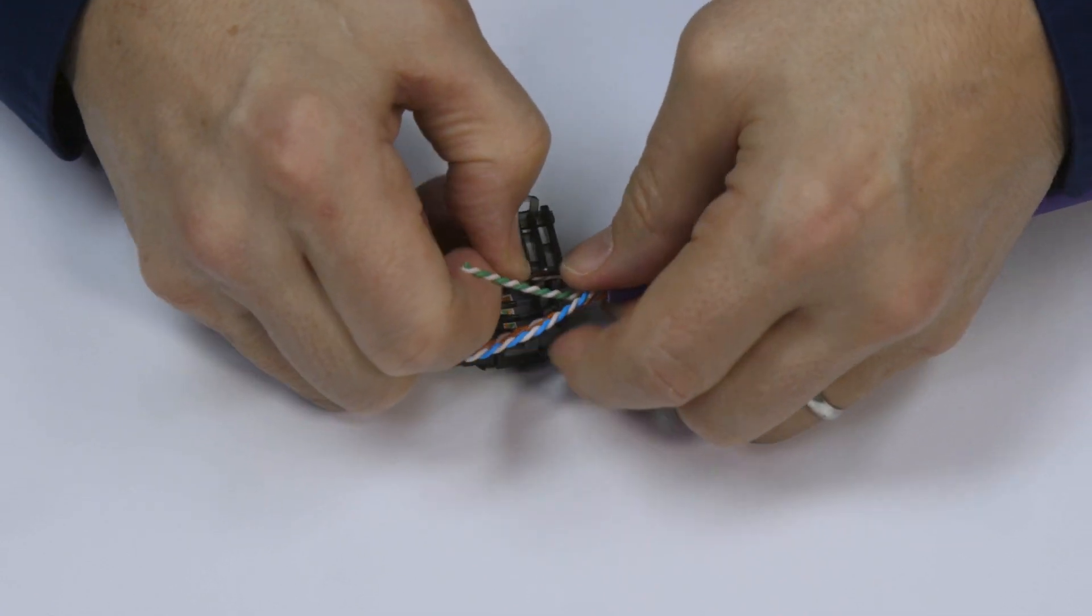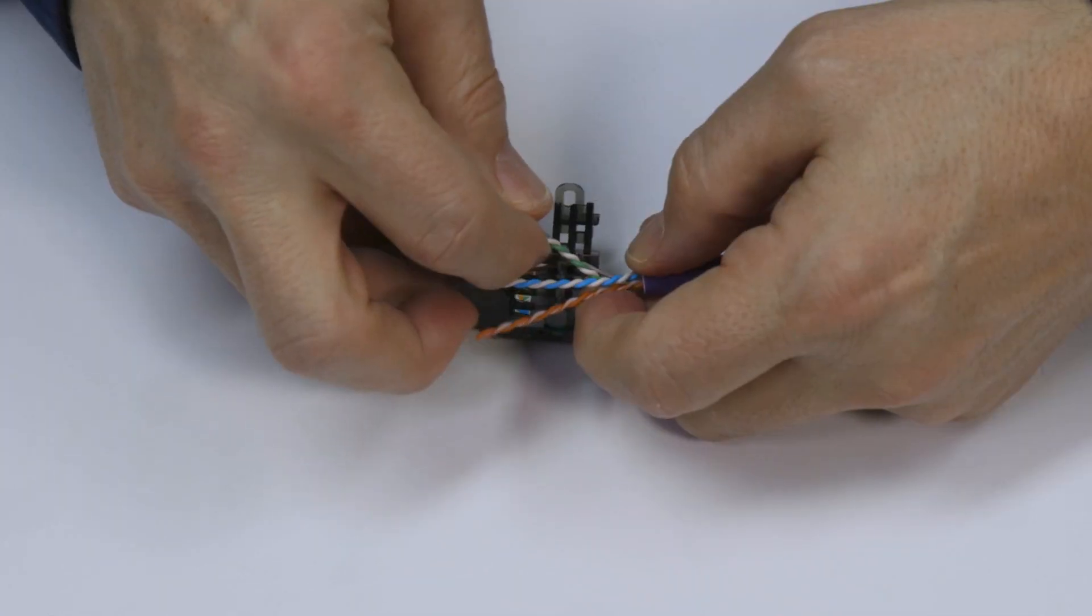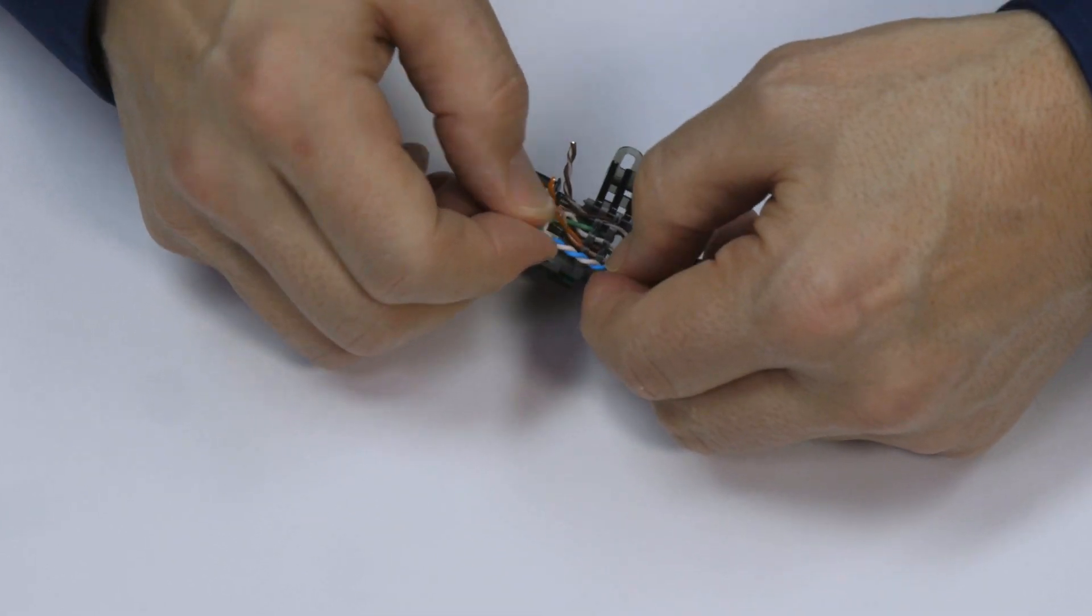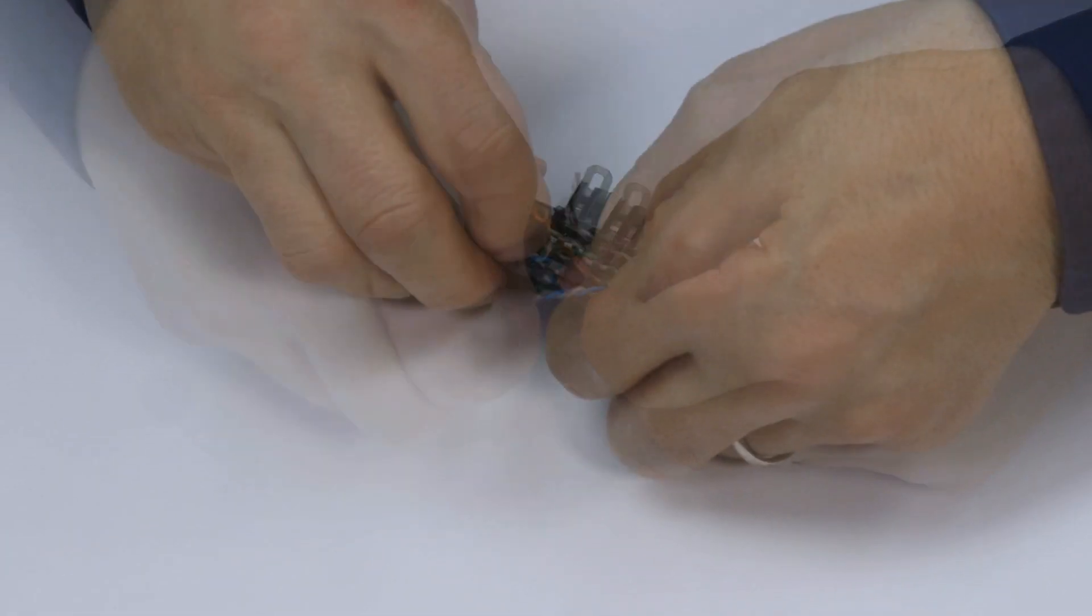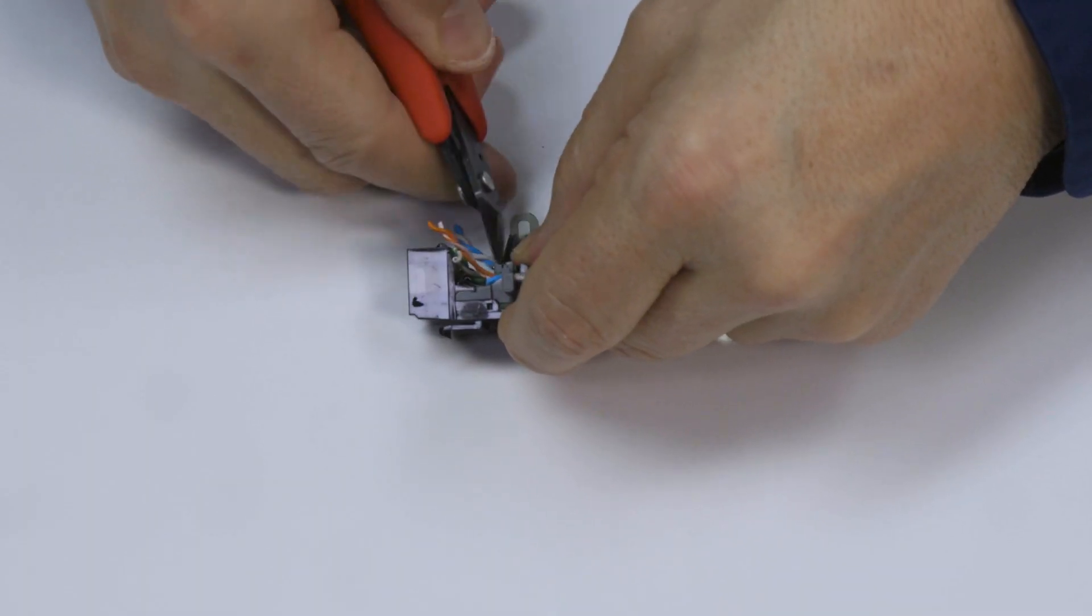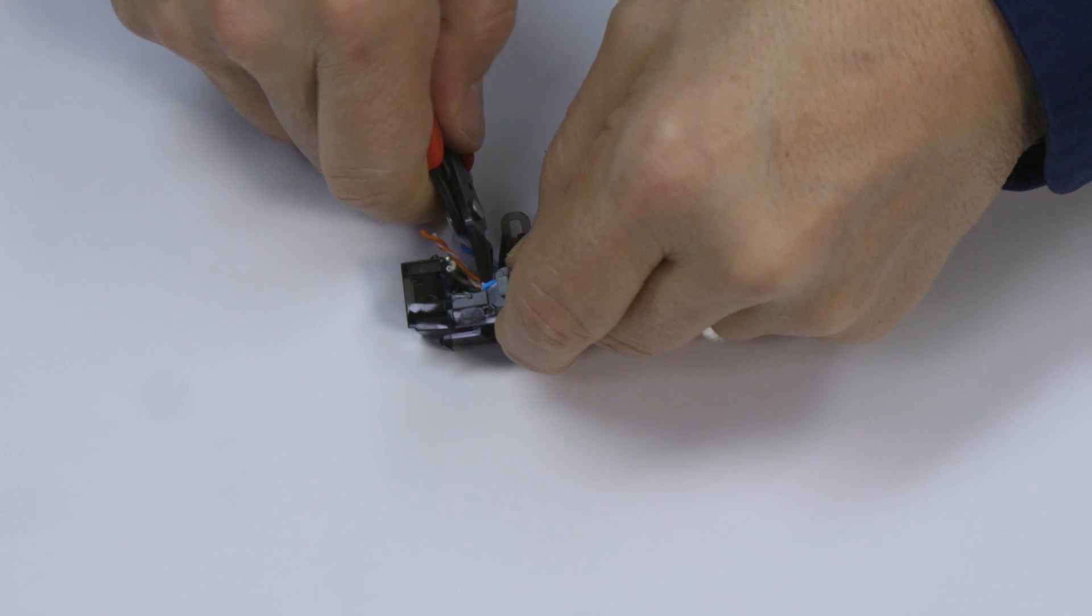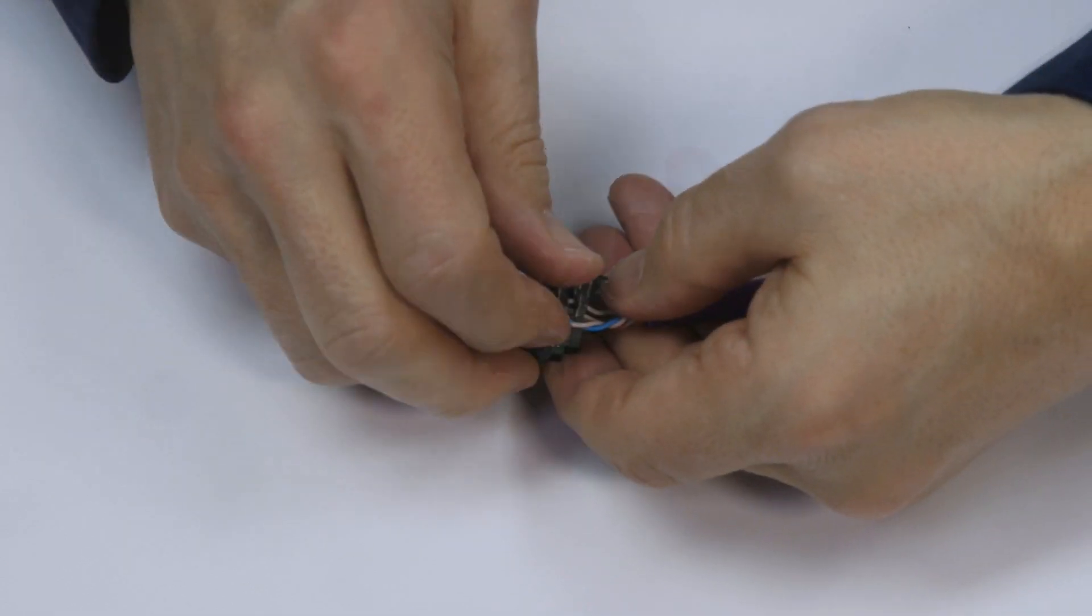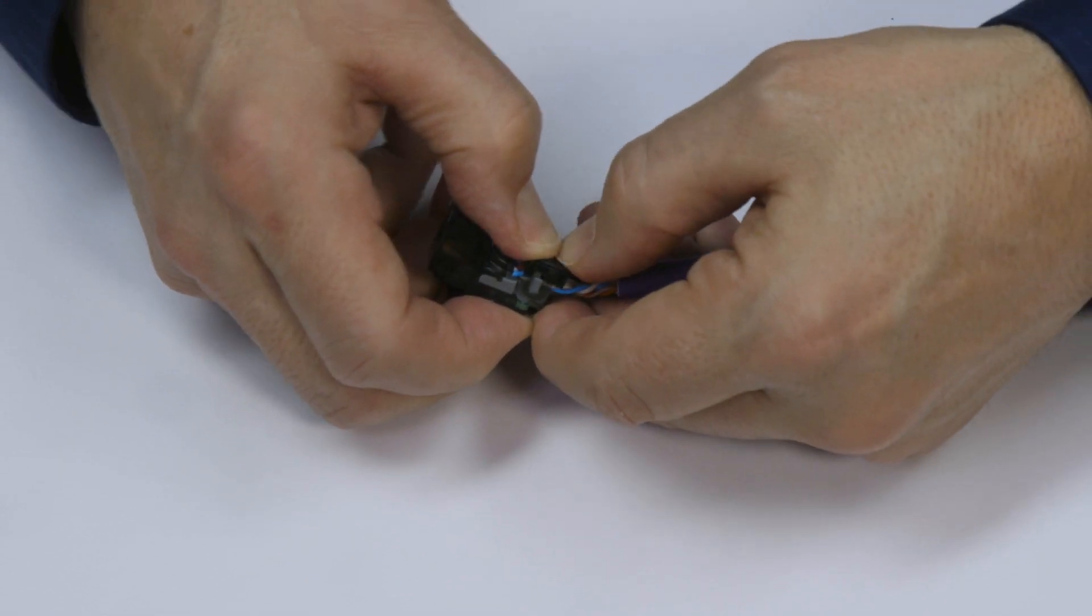Back twist the pair slightly and press each pair into their corresponding colors. Use flush cutters to remove the excess wire, then push the termination lever over onto the wire pairs.